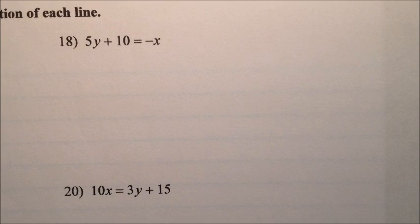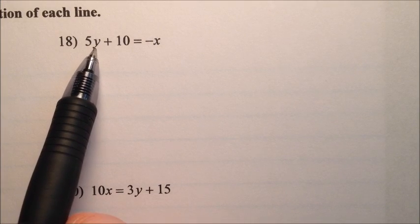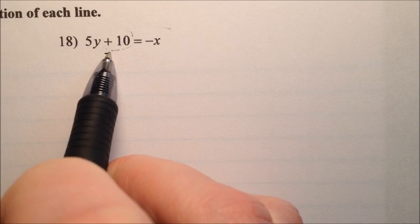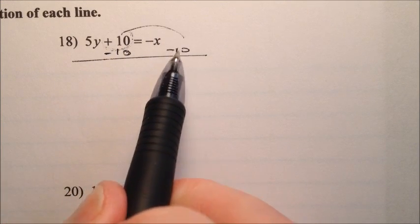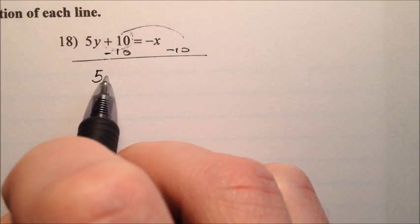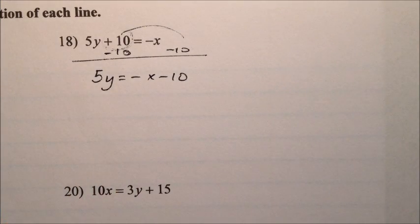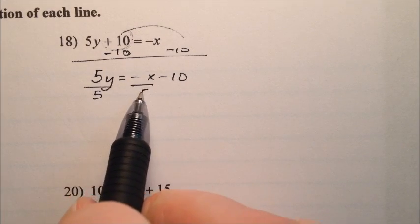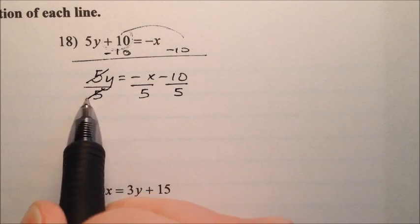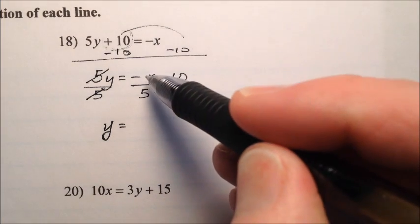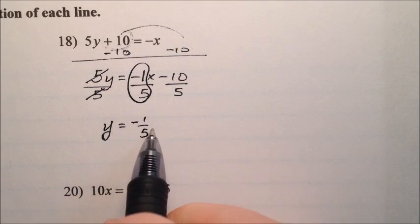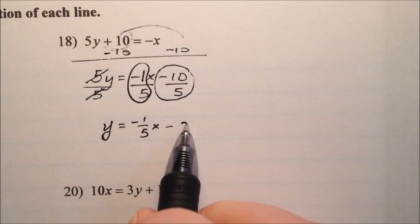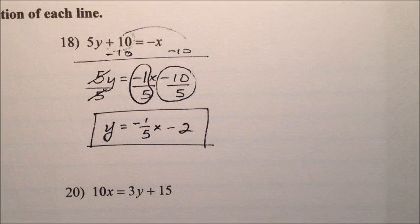In number 18, we're going to put it in y equals mx plus b form again. This y is almost by itself, so let's move this positive 10 over — we're going to subtract 10 from both sides, making it a negative 10. So we'll have 5y equals negative x minus 10. We just need to divide every single term by 5. Those 5's cancel, and y equals negative 1 fifth x minus 2. That's the slope-intercept form for number 18.